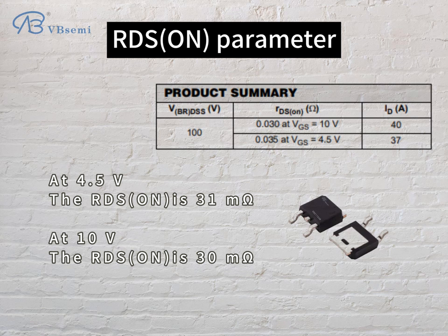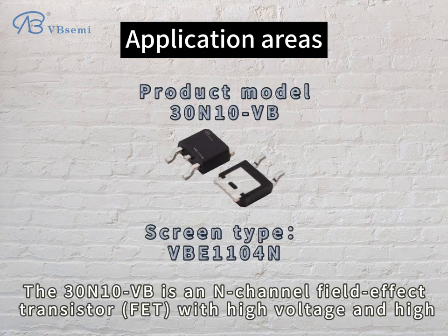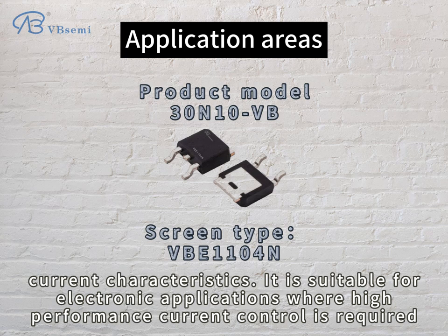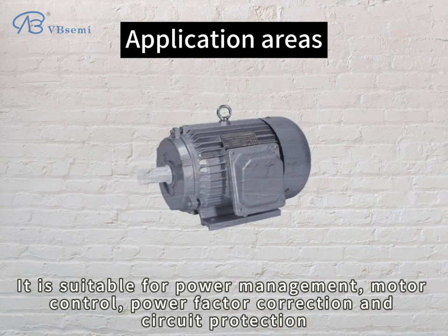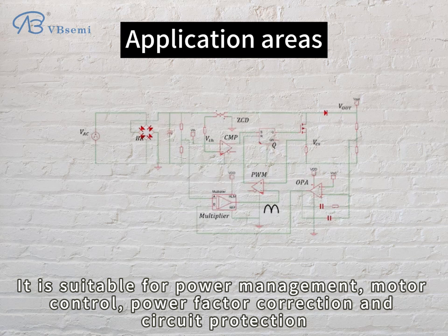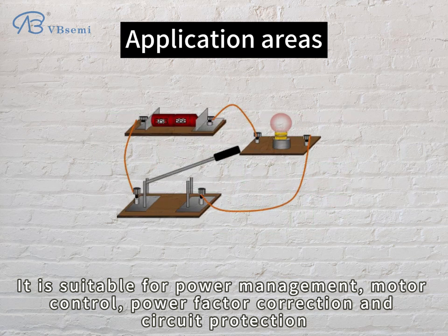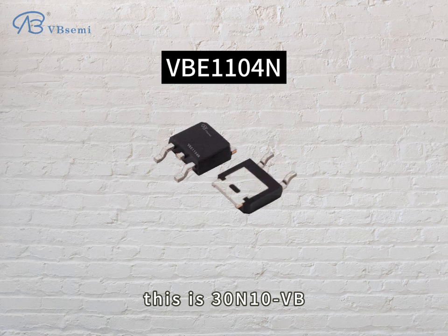The 30N10VB is an N-channel field effect transistor with high voltage and high current characteristics. It is suitable for electronic applications where high performance current control is required — including power management, motor control, power factor correction, and circuit protection.